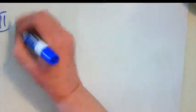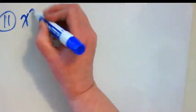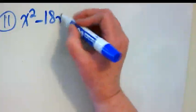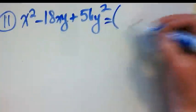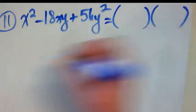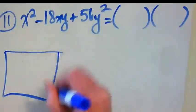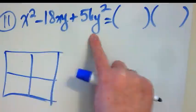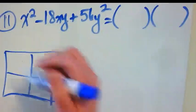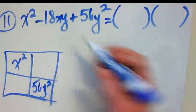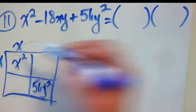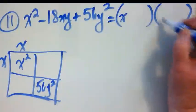Let's try one more problem together with two variables being dealt with again. Number 11. So x squared minus 18xy plus 56y squared. We're trying to find the factors that when I put them in our box, or I foil them, would give me this as a result.